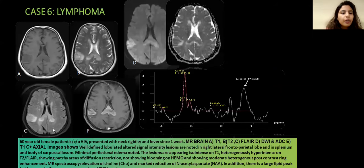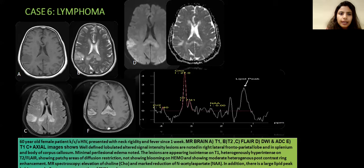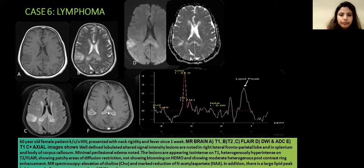Next case: 60-year-old female, known case of HIV, presented with neck rigidity and fever since one week. MR brain T1, T2, FLAIR, diffusion-weighted, and post-contrast T1 axial images showing well-defined lobulated altered signal intensity lesion in the right lateral frontoparietal lobe and splenium of the corpus callosum, with minimal perilesional edema, appearing isointense on T1, hyperintense on T2 and FLAIR, showing patchy diffusion restriction and contrast enhancement. On MR spectroscopy, there is a choline peak, reduced NAA level, and lipid lactate peak, suggestive of CNS lymphoma.